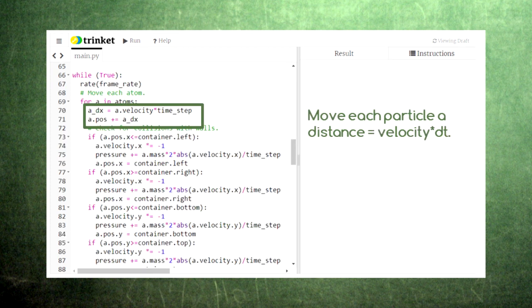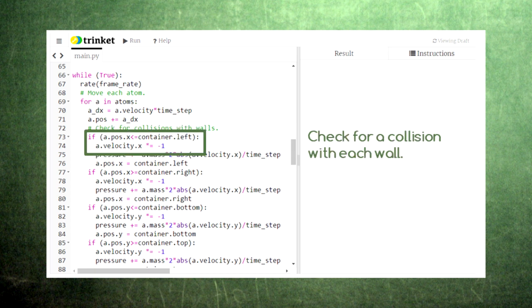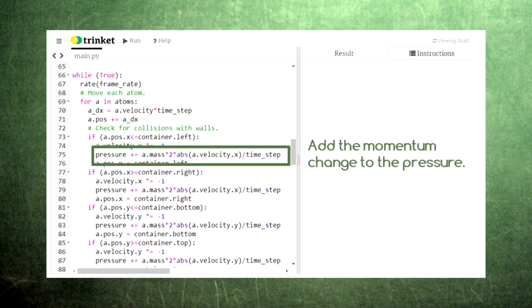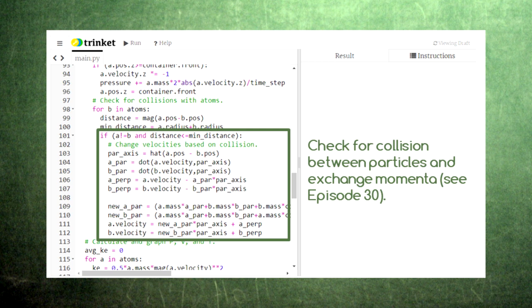In the animation loop, we move each particle forward using distance equals velocity times time. Then we need to check for whether each particle has collided with the walls of the box. If there was a collision, then we need to turn this particle around and record this collision in our calculation of the pressure. Then we need to check for whether any two particles have collided. If so, we use the glancing collision code from episode 30 to make the particles bounce off of each other. Notice that we don't record this collision in our calculation of the pressure since it's internal to the gas.